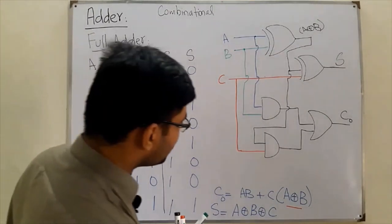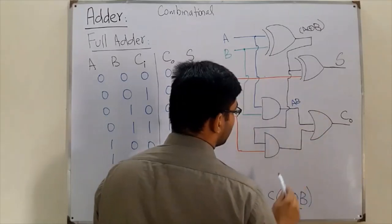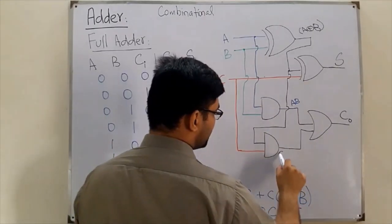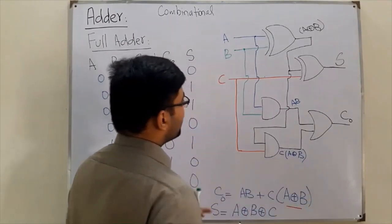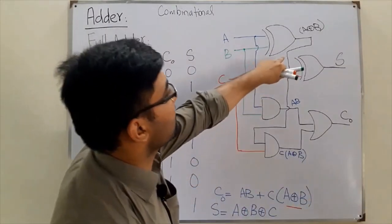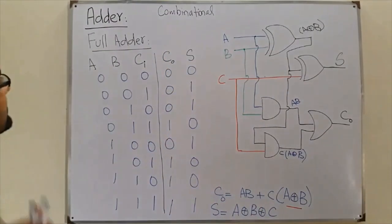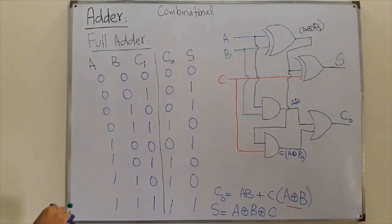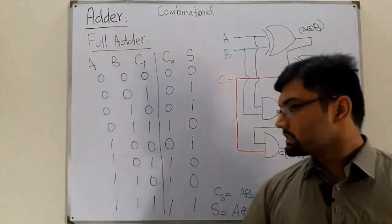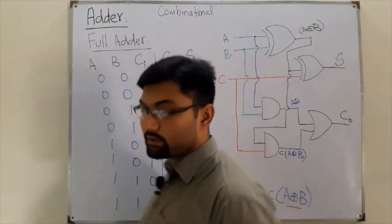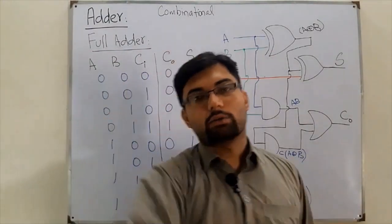So this is the circuit diagram for the full adder: A AND B feeds the first AND gate, and C ANDed with A XOR B feeds the second AND gate, ORed together for carry. This covers the basics of adders — the half adder and the full adder, both combinational circuits. That's all for today, see you in the next lecture.